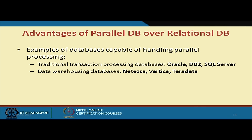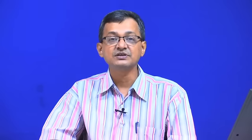Examples of databases capable of handling parallel processing for traditional transaction processing include Oracle, DB2, and SQL Server. For data warehouse applications there are systems like Vertica, Teradata, and Netezza. With this background, we now look at cloud file systems.